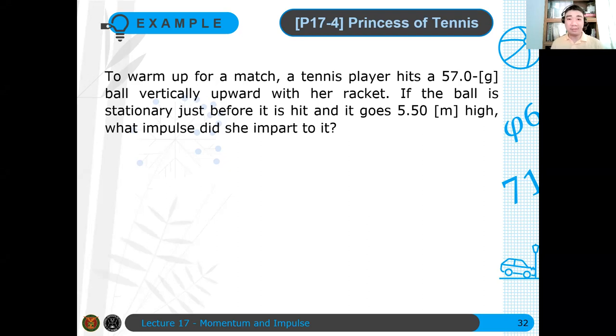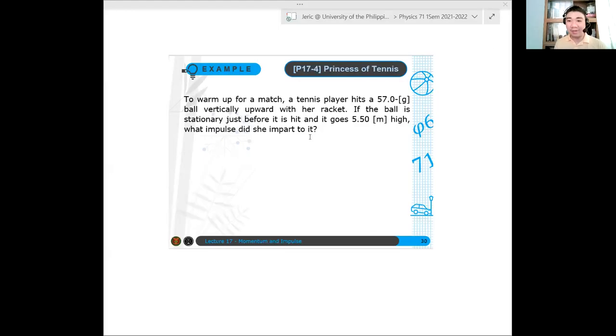So I'll just solve this problem because our time is already limited. Okay, again, we have a tennis player hitting a 57-gram ball. So this is 57.0 grams, and in kilograms it's about 0.057 kilograms.